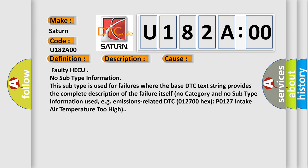Faulty HEC UNO subtype information. This subtype is used for failures where the base DTC text string provides the complete description of the failure itself. No category and no subtype information used, for example, emissions-related DTC 012700-HECS-P0127 intake air temperature too high.